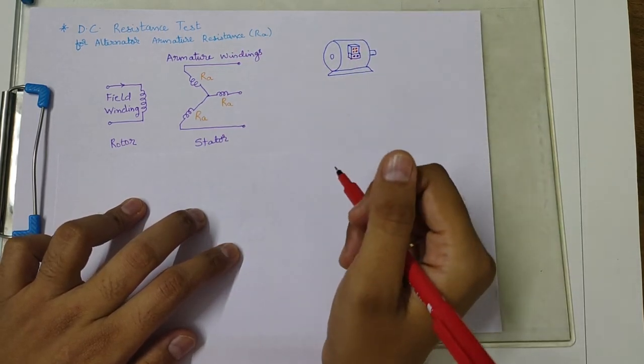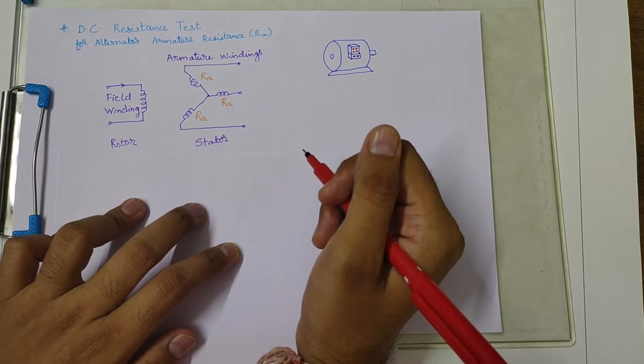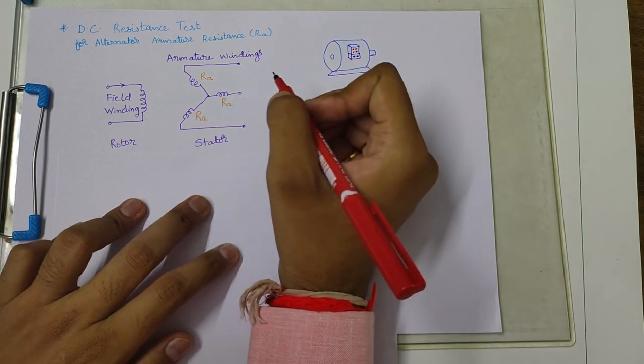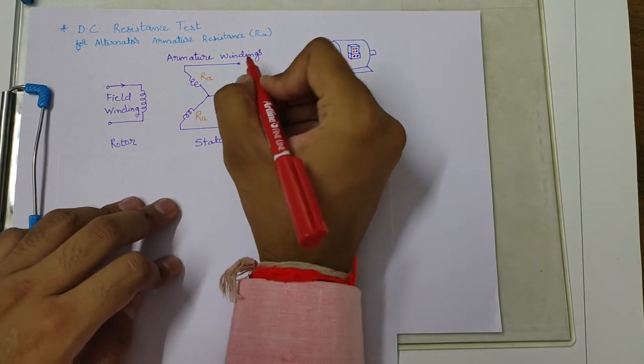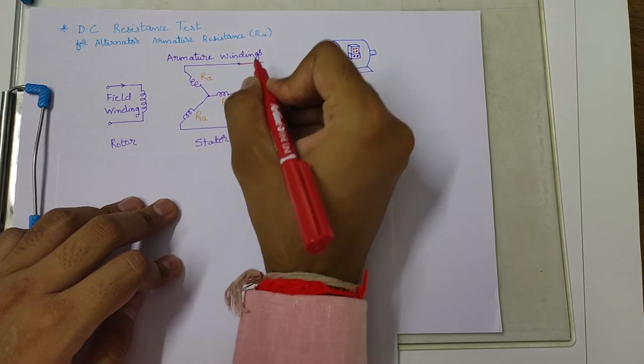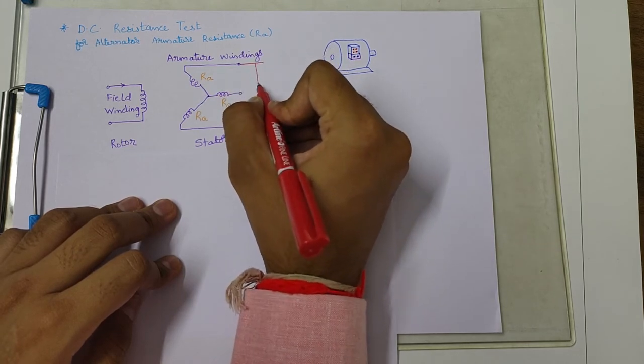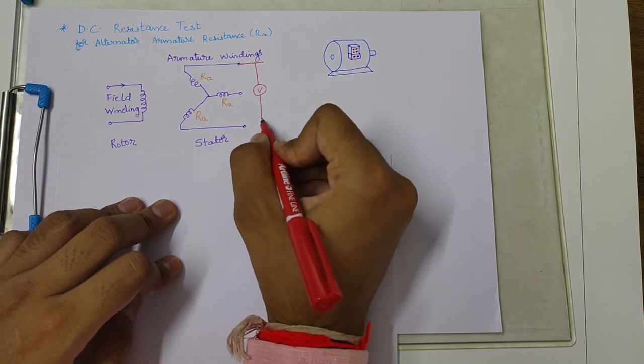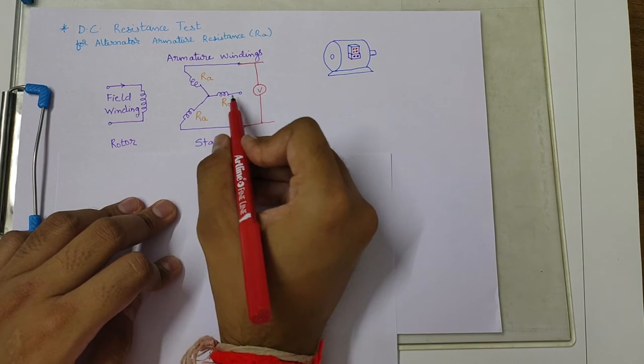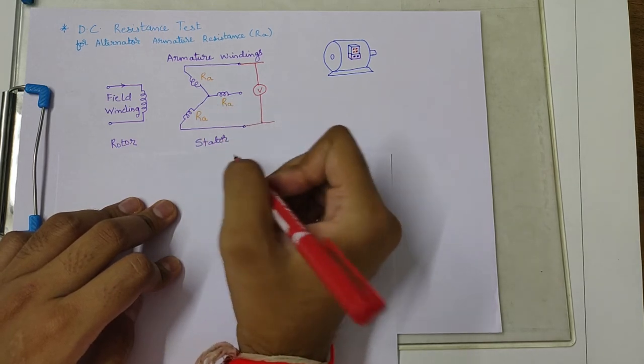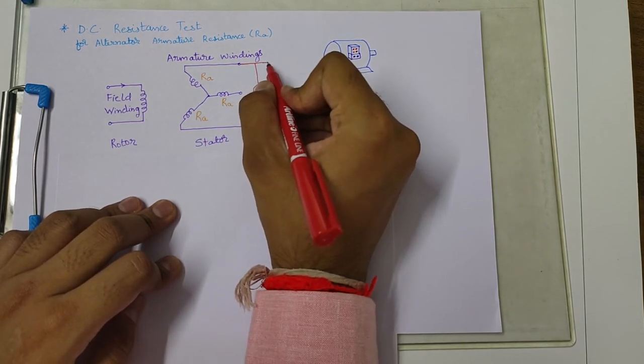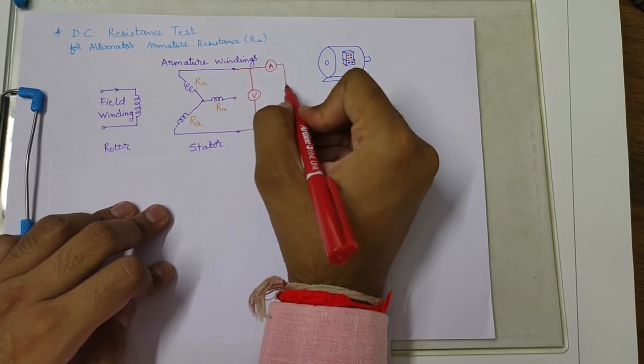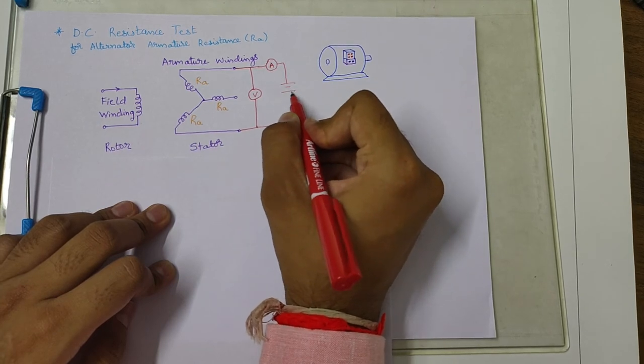As you can see here, I will have only three terminals at the terminal box. So how shall I connect voltmeter and ammeter to calculate the resistance by Ohm's law? First of all, I will connect the voltmeter with any two terminals and I will keep one terminal open, and I will connect an ammeter in series with the windings and provide a DC supply.